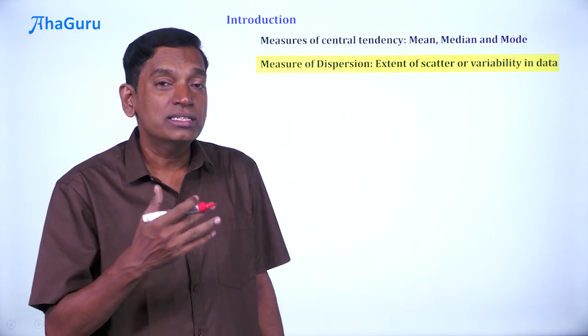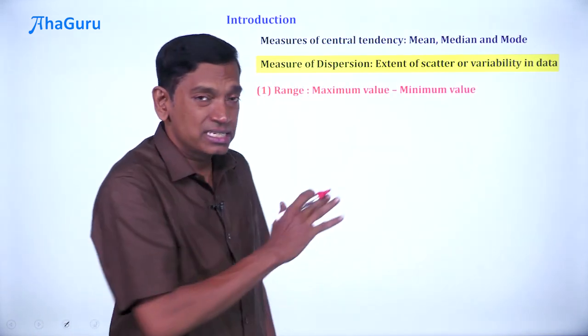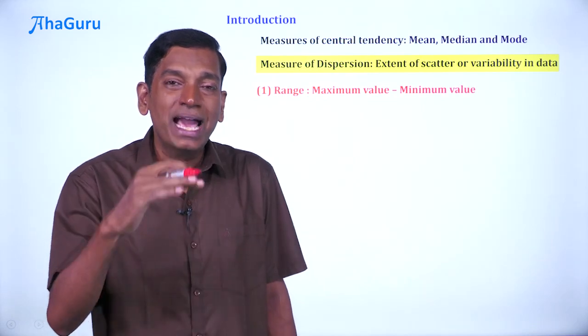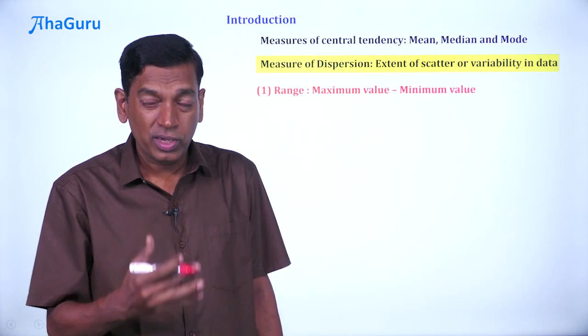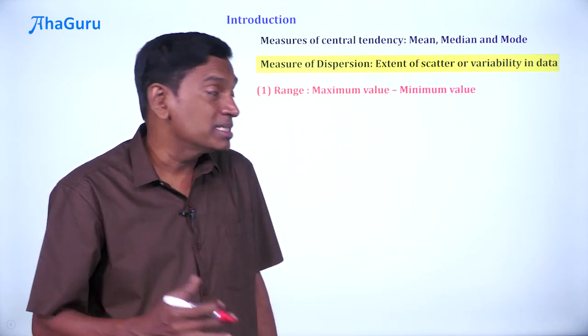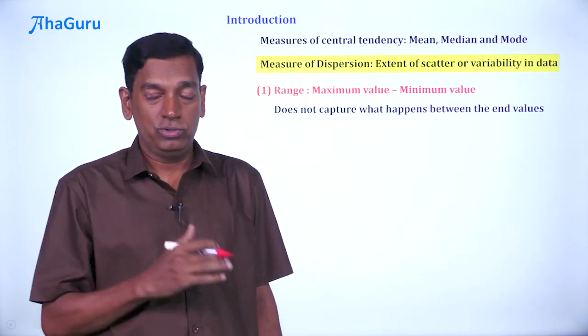Well, let us look at some options. The first one is what is known as range, which is simply the maximum minus the minimum value. It is a crude measure of dispersion, but the big problem is it does not capture what happens between the end values.